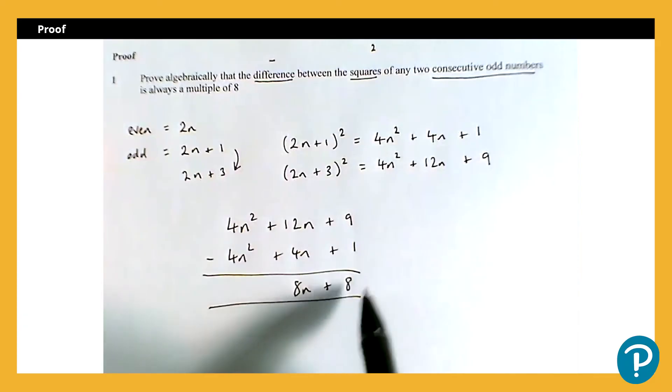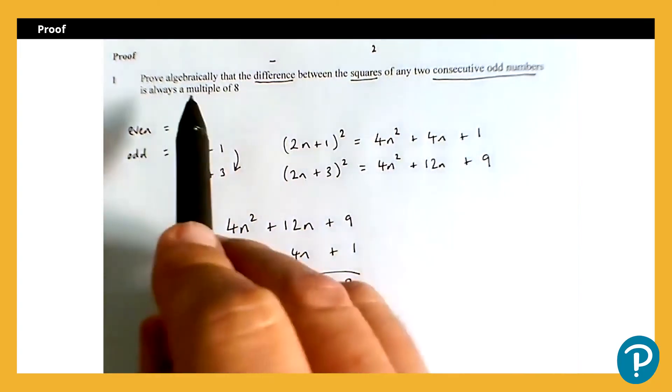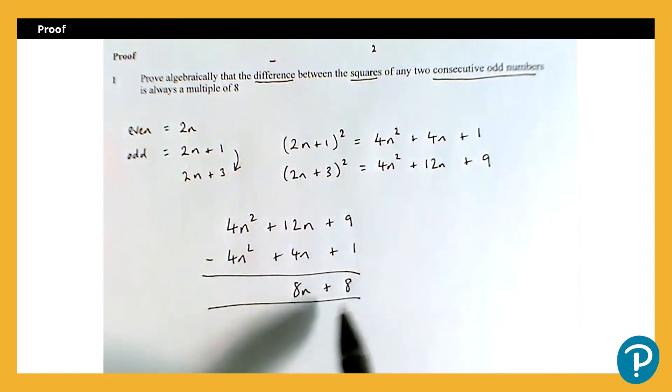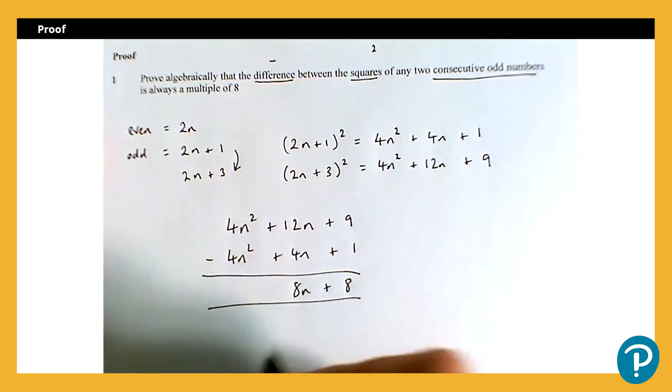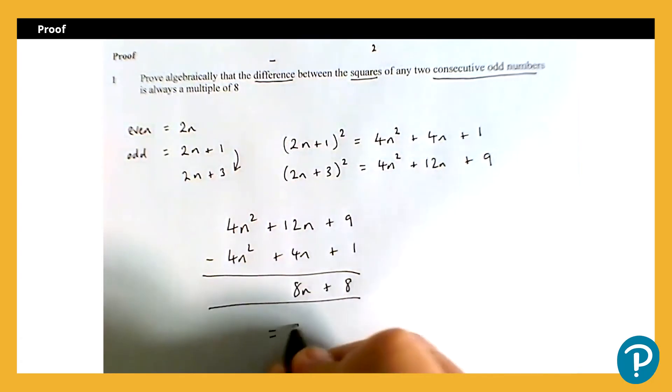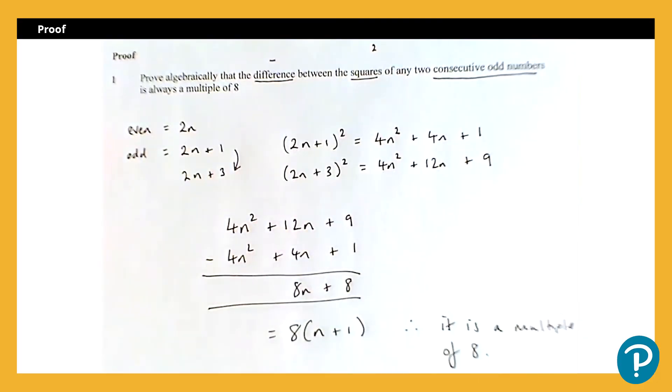So the difference between the squares of any two consecutive odd numbers could be written as 8n plus 8. We then just need to show that's always a multiple of 8. Now we can do it from here by explaining that both of these are divisible by 8, or we can do it by factorizing, and that is 8 into n plus 1. So therefore, it is a multiple of 8. And we're done.